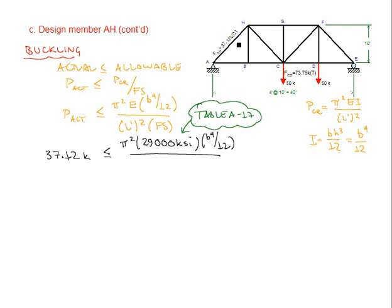The length of member AH, knowing that this dimension from A to B is 10 feet and this dimension from B to H is 10 feet, we can quickly find that the length of member AH is equal to the square root of 10 squared plus 10 squared, which equals 14.14 feet. If we convert this to inches, since we've got inches here and we know that our square is expected to be in units of inches, this will be 169.7 inches.